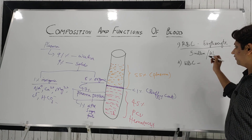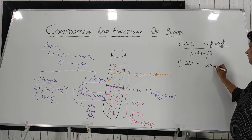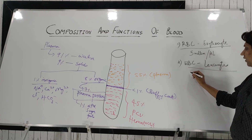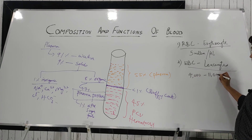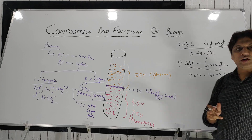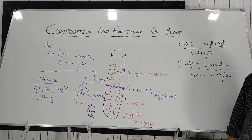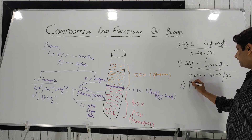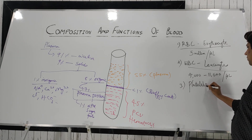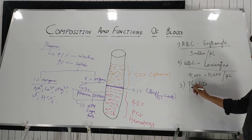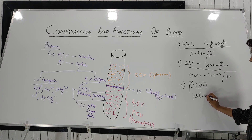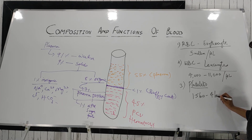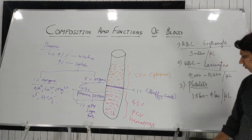White blood cells, or WBCs, also known as leukocytes, generally consist of around 4,000 to 11,000 cells per microliter of blood. Finally, platelets — around 1.5 lakhs to 4 lakhs cells per microliter of blood. You should remember these normal values — they are very important.